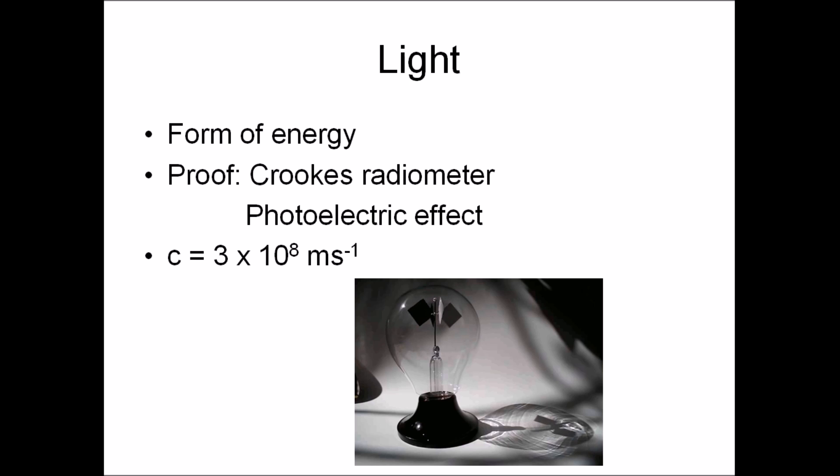So what is light? Light is a form of energy. This can be proved using a Crookes radiometer, which is shown below, and the photoelectric effect, which was discussed in my video on the electron.